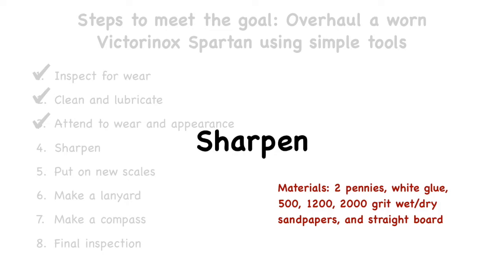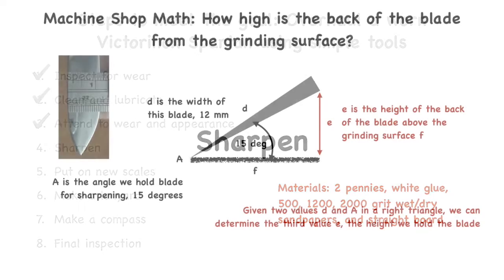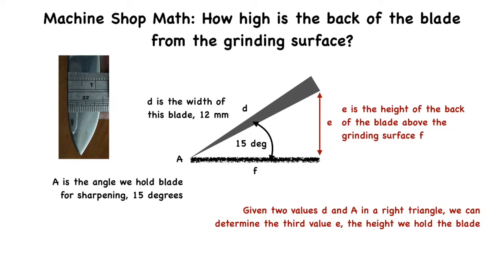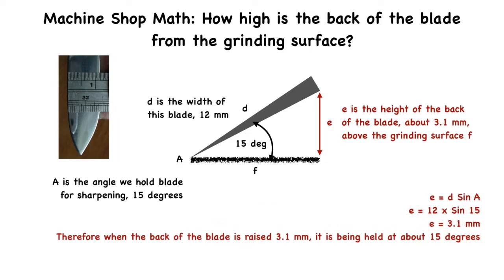The blades need to be sharpened at a specific angle for the best cutting action. Victorinox, like many other manufacturers, recommends the blades be held at about 15 to 20 degrees to the surface of the abrasive. So how do we hold the blade at about 15 degrees from the grinding surface? One way is to buy a sharpener that holds the knife at the proper angle, but the goal here is to use simple tools to overhaul this knife. The abrasives will therefore be sandpaper and some sort of simple tool that sets a 15-degree sharpening angle.